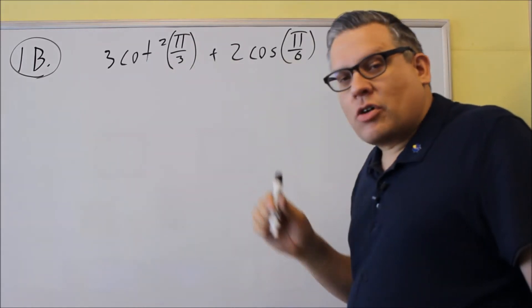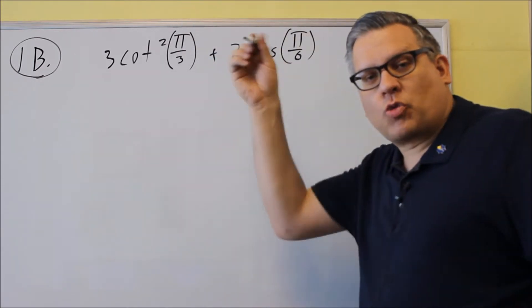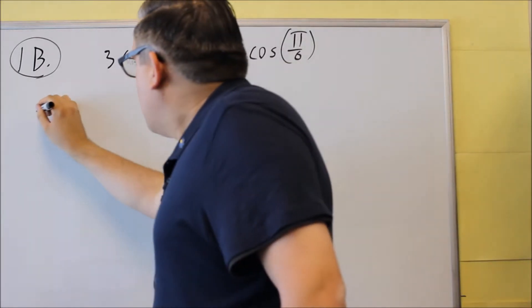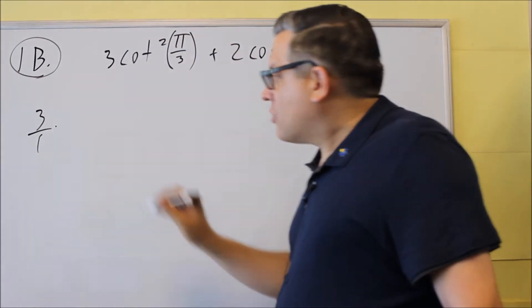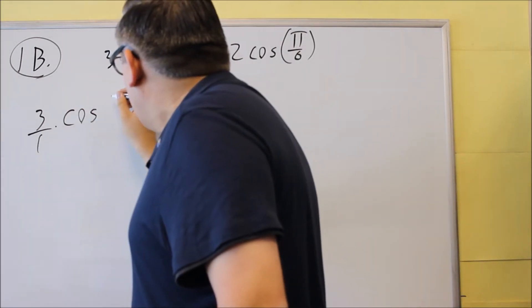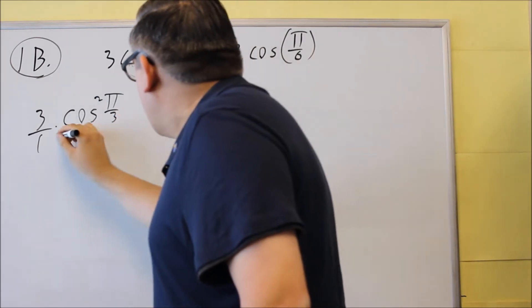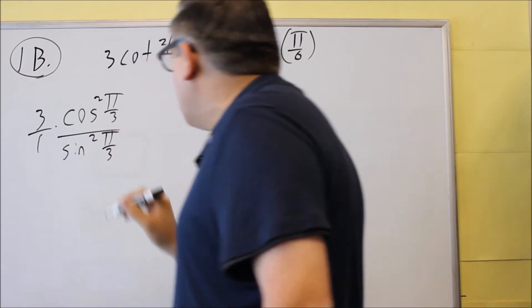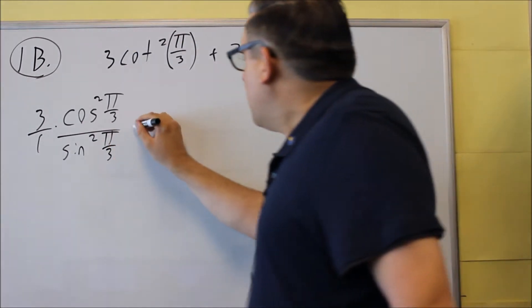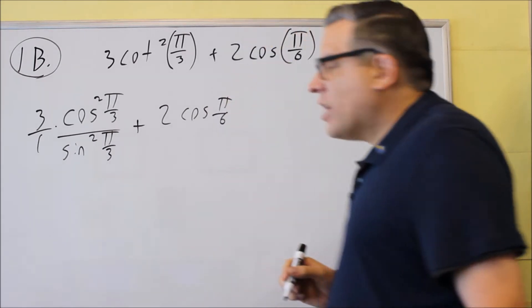For cotangent, we'll use an identity for that one. That's going to be cosine over sine and because it's squared, we'll square the top and bottom. So when we begin by writing this out, we'll do 3 over 1. Cotangent is again cosine pi over 3 and we have to square that one. On the bottom we have sine pi over 3 and that's also going to be squared. And then this one here, we don't need an identity for that, we can just use that one as is.